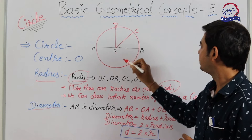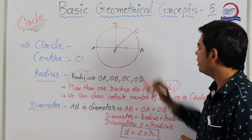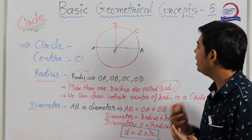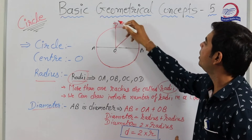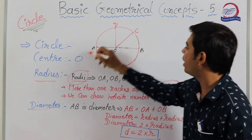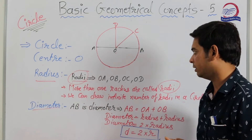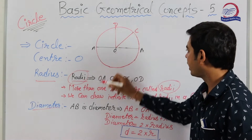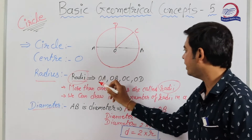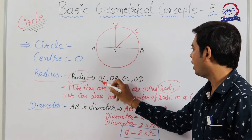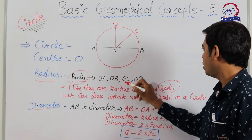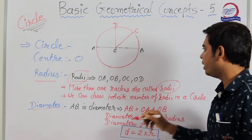In this figure, OB, OC, OD, and OA are all radii. So the radii here are: OA, OB, OC, and OD.